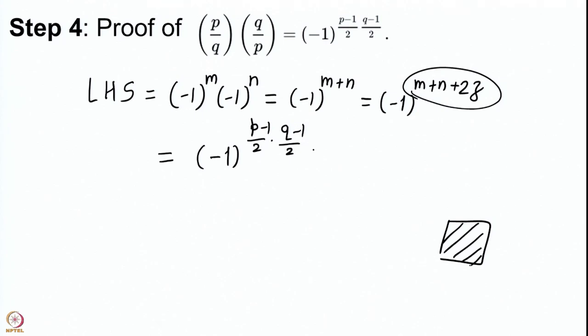Since adding an even number to the exponent does not change the value of (−1) to that power, we get (−1)^{m+n+2z}. But this is now the number of lattice points in the region R, which equals (p−1)/2 · (q−1)/2. Let me draw a rectangle here because this was indeed a very long proof — but now it is proved. To quickly recall: we constructed a rectangle with (p−1)/2 · (q−1)/2 lattice points, divided it into 4 parts; the 2 middle parts gave the Legendre symbols (p/q) and (q/p), and the remaining 2 parts had equal lattice point counts.